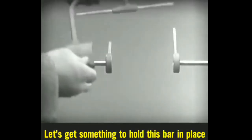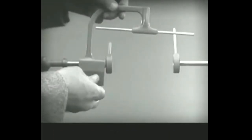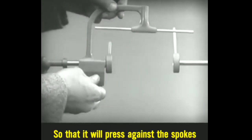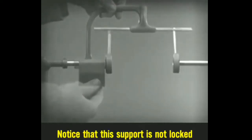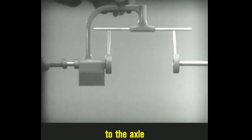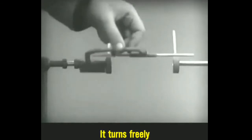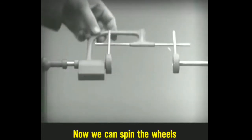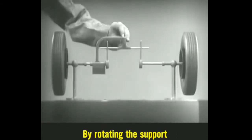Let's get something to hold this bar in place so that it will press against the spokes. Notice that this support is not locked to the axle. It turns freely. Now, we can spin the wheels by rotating the support.